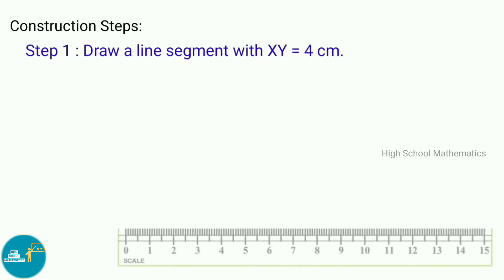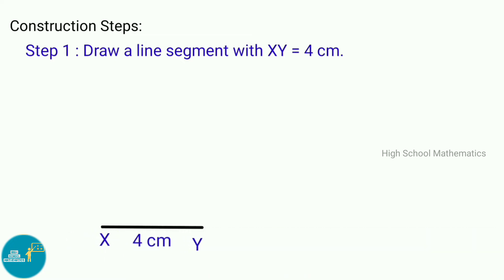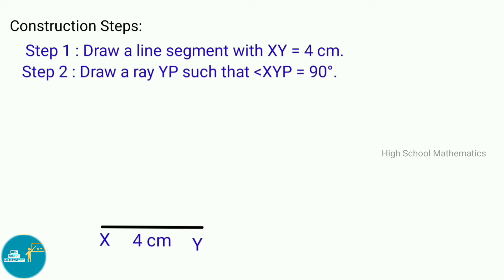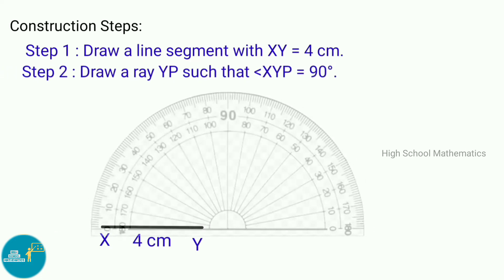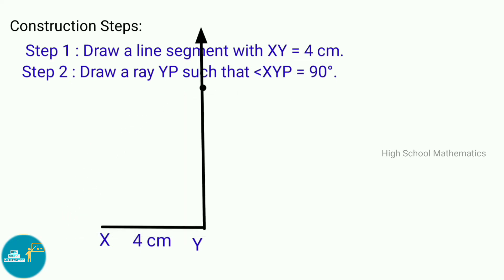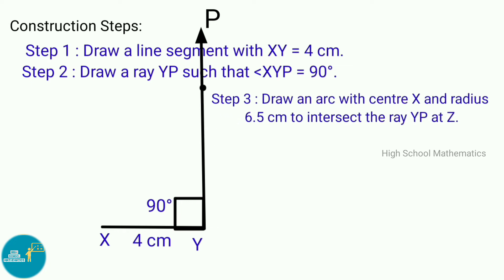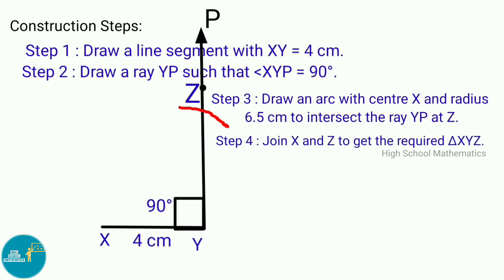Construction steps — Step 1: Draw a line segment XY equal to 4 centimeters. Step 2: Draw a ray YP such that angle XYZ equals 90 degrees. Step 3: Draw an arc with center X and radius 6.5 centimeters to intersect ray YP at Z. Step 4: Join X and Z to get the required triangle XYZ.